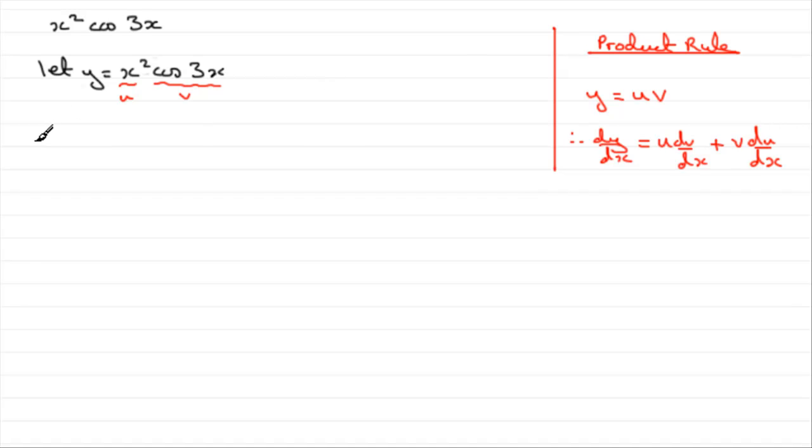So if we're going to find dy by dx, I'd write therefore dy by dx equals u. So that's going to be x squared. I'd encourage you to put this in brackets. Okay, so we've got one part times the differential of the other part. So the differential of cos 3x. We have to use the chain rule for this or you might know the result. And if you're unsure of how to differentiate this, I'll do this at the end, okay, for you.